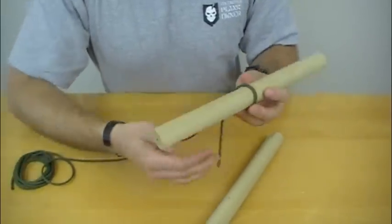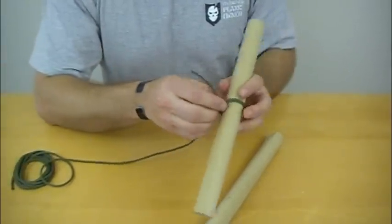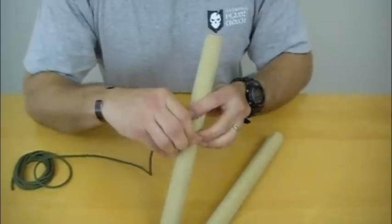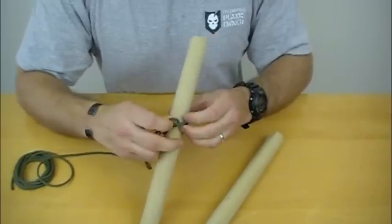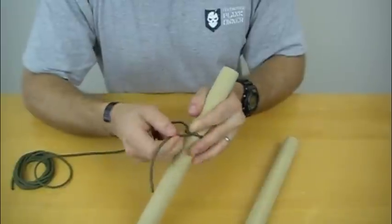Essentially what you're going to do with a timber hitch is it's just like an overhand knot that's wrapped a few more times.